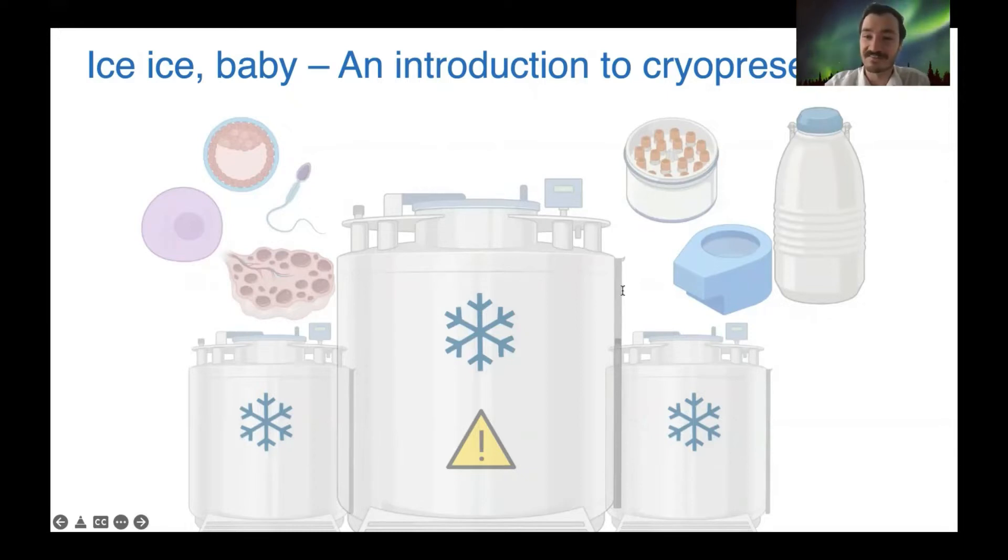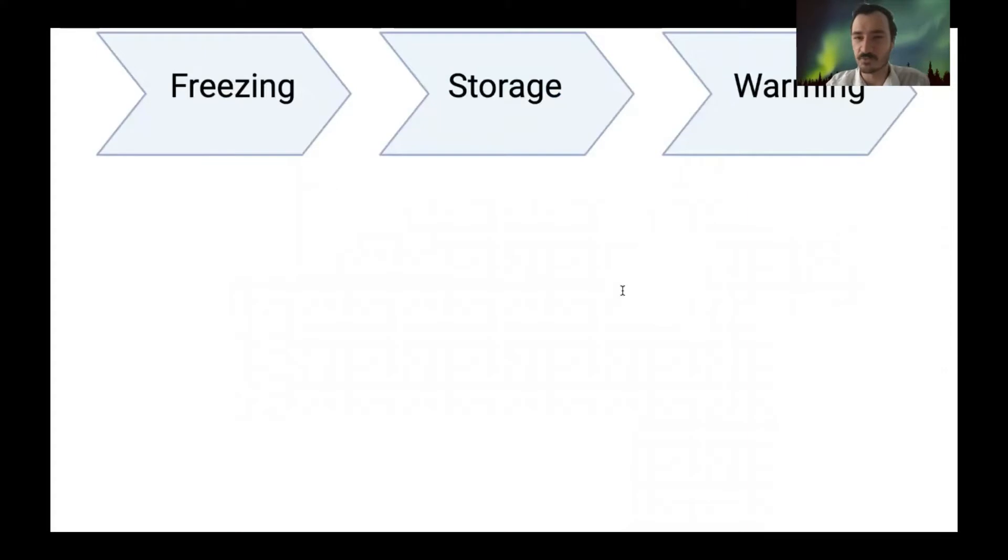Cryopreservation is the maintenance of cells and tissues at ultra low temperatures without compromising the integrity or viability. Generally speaking, cryopreservation involves three broad steps: freezing, storage and warming.